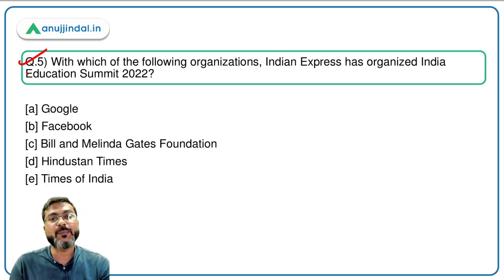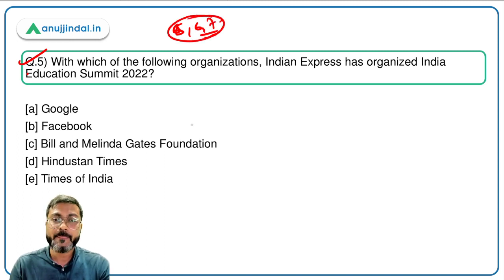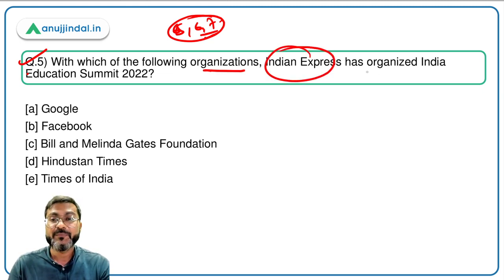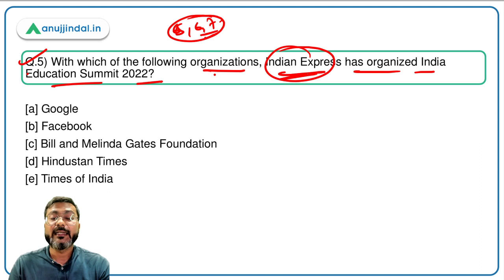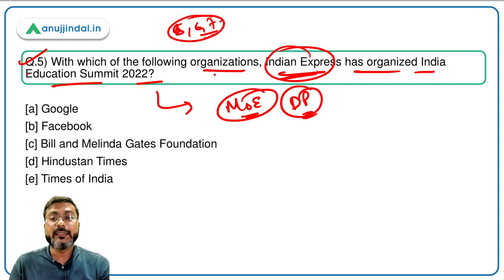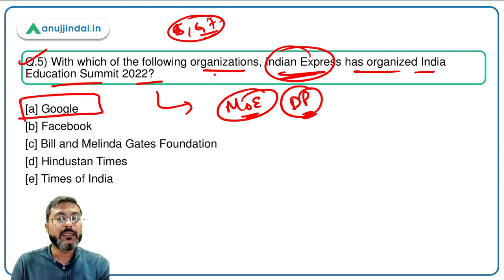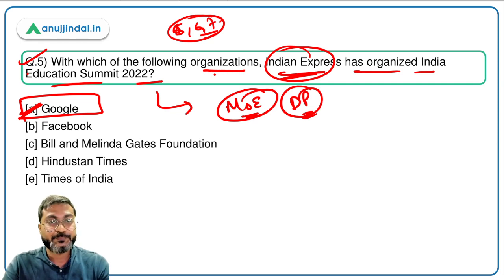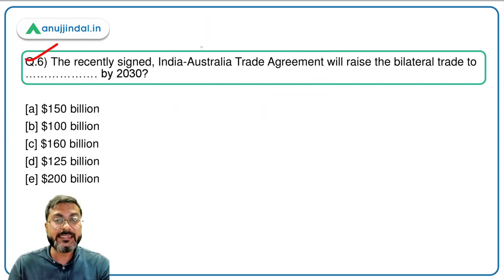Questions five, six, and seven are direct questions. Question five: with which organization has Indian Express organized the India Education Summit 2022? Indian Express organized this summit in collaboration with Google, and the Minister of Education, Dharmendra Pradhan, participated. Therefore, option A — Google — is the correct answer.